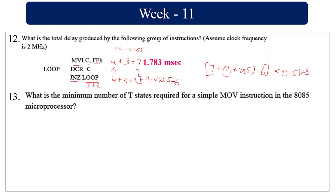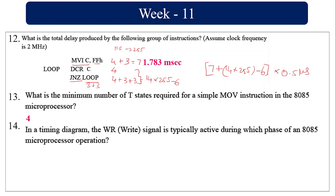The minimum number of T-states for a simple MOV instruction is 4 T-states (opcode fetch only). In the timing diagram for a memory write operation, three T-states are needed: T1, T2, and T3. In T1, the address where data should be written is fetched, and in T2 the write signal is activated.